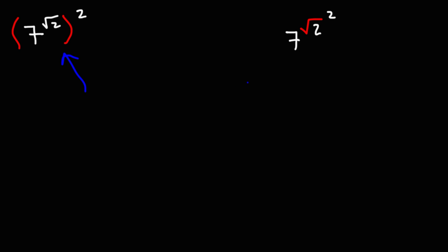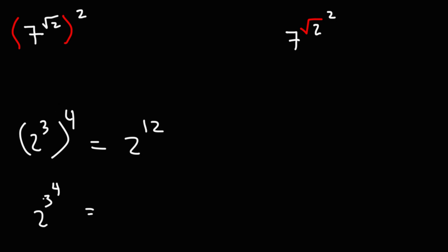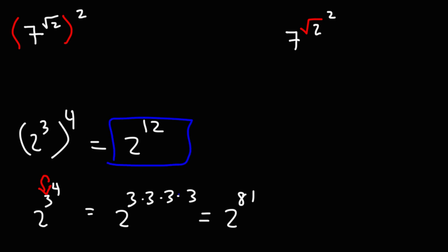What's 2 to the 3rd raised to the 4th power versus 2 to the 3rd to the 4th written without parentheses? In the first case, we multiply 3 and 4: 3 times 4 is 12, so we have 2 to the 12th. For the second, the 4 only applies to the 3, so we raise 3 to the 4th power: 3 times 3 is 9, times 3 is 27, times 3 is 81. So this is 2 to the 81. Notice that the results are significantly different.